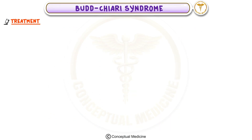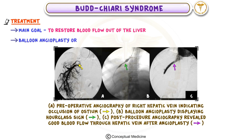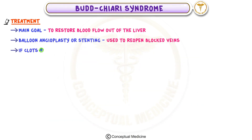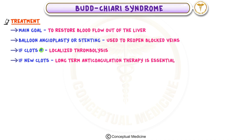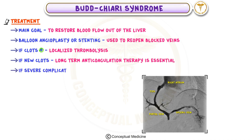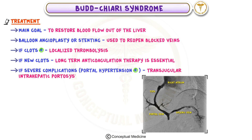When it comes to treatment, the main goal is to restore blood flow out of the liver. In some cases, balloon angioplasty or stenting is used to reopen blocked veins. If clots are present, localized thrombolysis may help dissolve them. Long-term anticoagulation therapy is essential to prevent new clots from forming. For patients with severe complications such as portal hypertension, procedures like TIPS — transjugular intrahepatic portosystemic shunt — may be necessary.